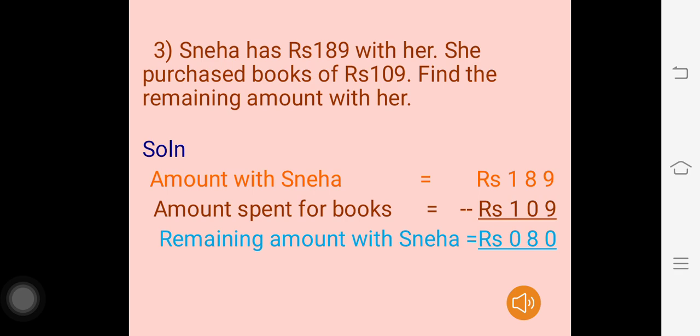Remaining amount means we have to subtract: 189 minus 109. Starting with the units or 1's place — 9 minus 9 is 0, 8 minus 0 is 8, 1 minus 1 is 0. The remaining amount with Sneha is equal to rupees 80.